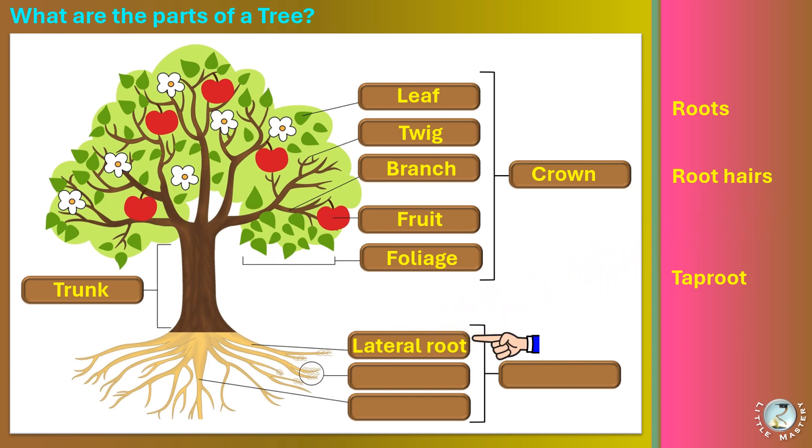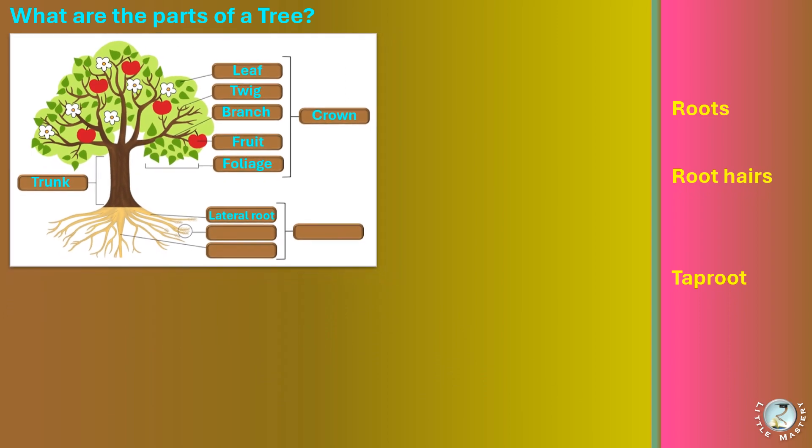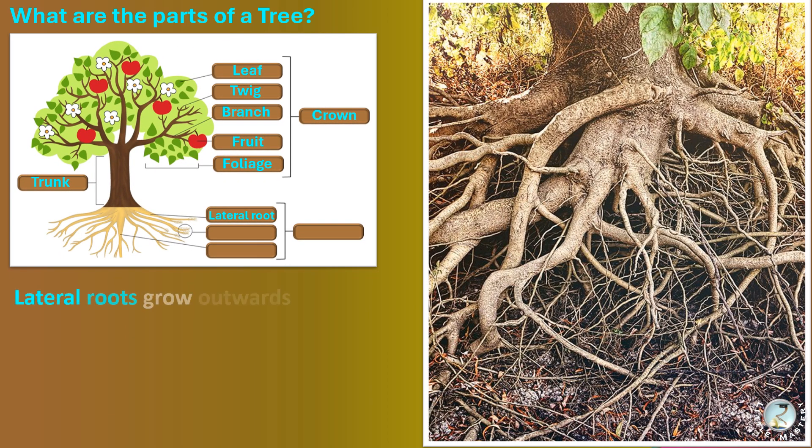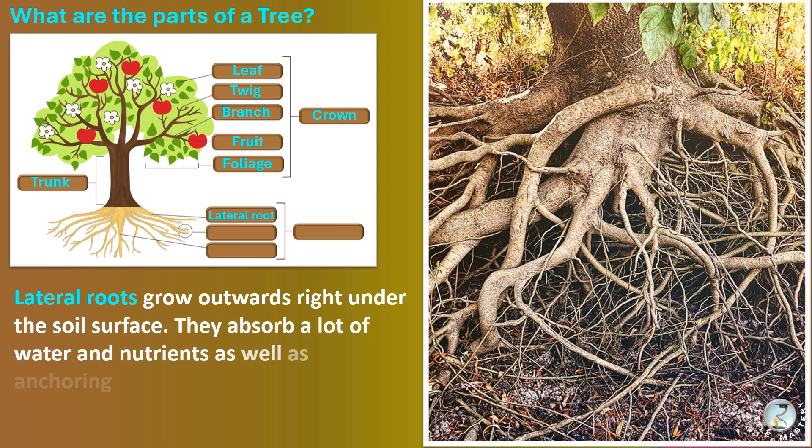Lateral roots grow outwards right under the soil surface. They absorb a lot of water and nutrients as well as anchoring the tree.